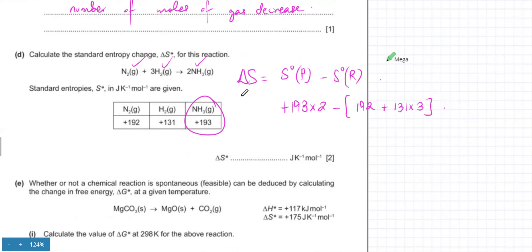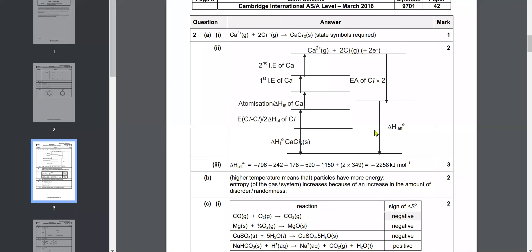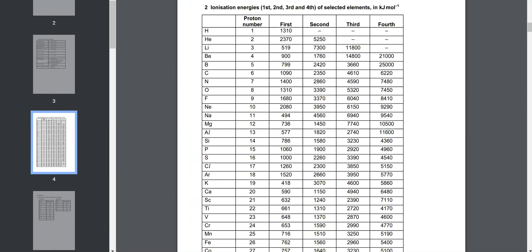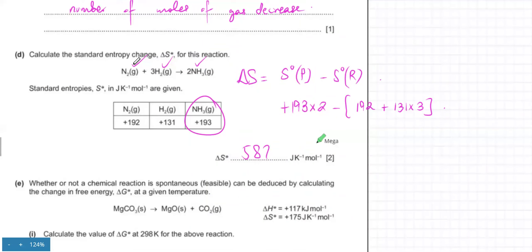Calculating the expression gives −199 kJ/mol. One way to check: there are four molecules of gas turning into two molecules of gas, so less gas is formed, meaning the entropy change should indeed be negative. Make sure on your calculator you use brackets so the calculator clearly knows what's happening.